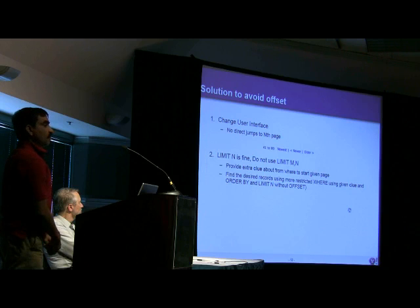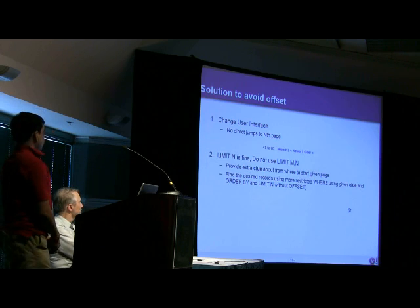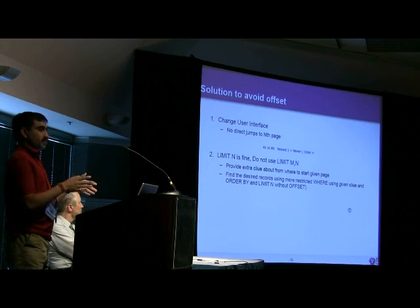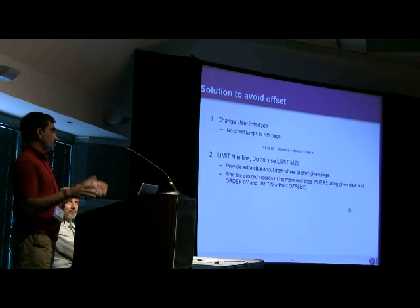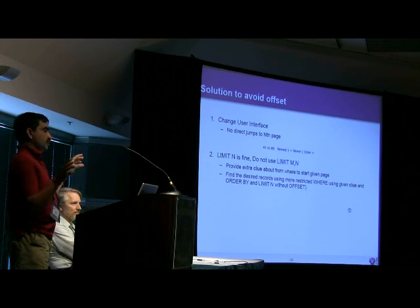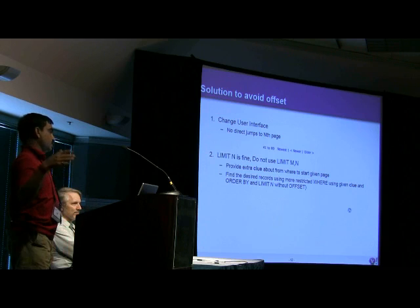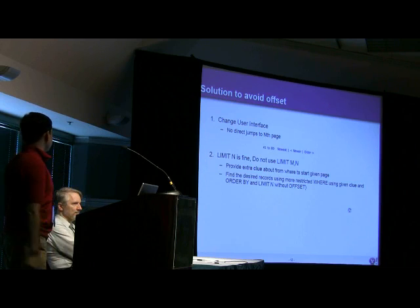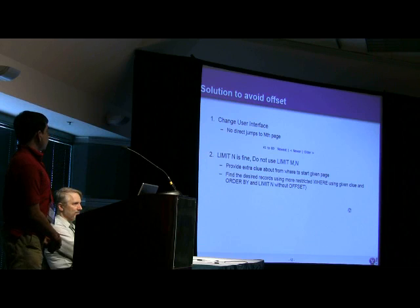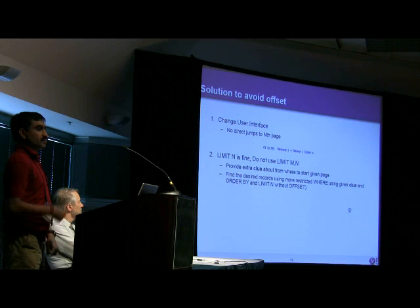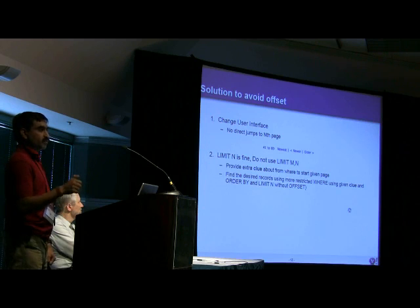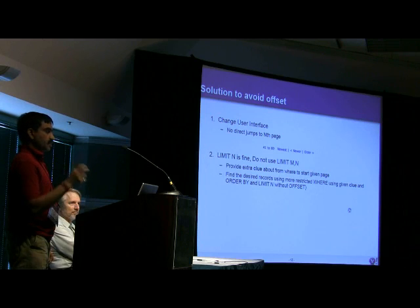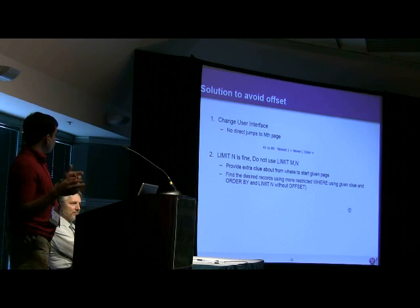How can we avoid offset? Again, go to the user interface. Simply say next and previous. Do not let user jump to any page. Let him not go to hundredth page, tenth page. Do not let him go there. Let him go by next, next, next, or previous, previous, previous. LIMIT n is fine. That's a good feature in MySQL, that execution stops as soon as it finds n number of rows. But LIMIT m comma n is very bad, because it has to now read m plus n rows.